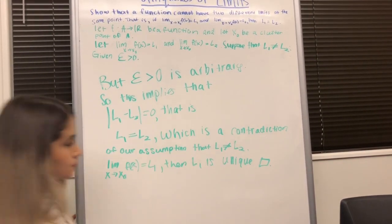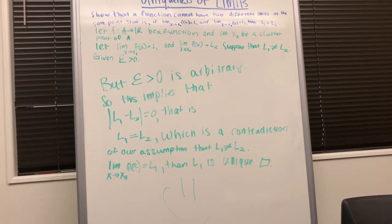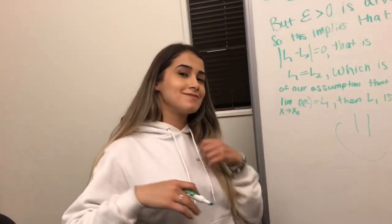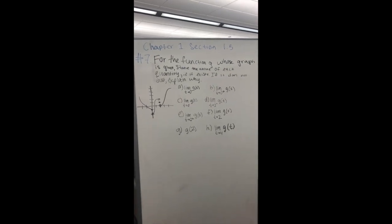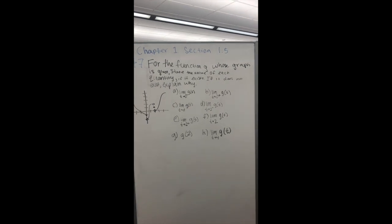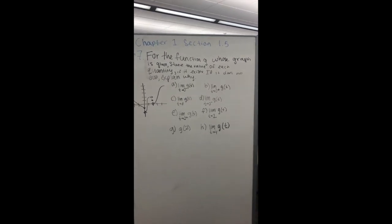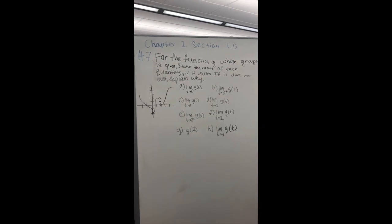So for my review question I have chapter 1 section 1.5 number 7. For the function G whose graph is given, state the value of each quantity if it exists. If it does not exist, explain why.